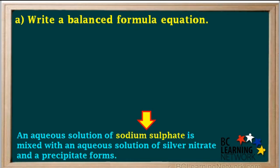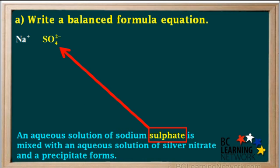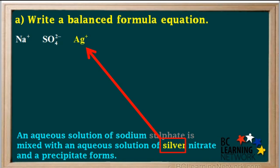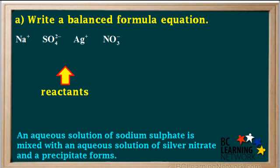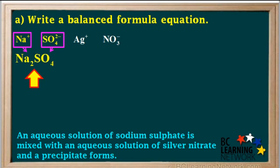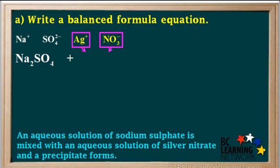We'll start with the formula equation. The first reactant is sodium sulfate, which is made up of sodium, or Na+ ions, and sulfate, or SO4 2- ions. You can find the formulas and charges for all common ions on an ion table. The second reactant is silver nitrate, which is made up of silver, or Ag+ ions, and nitrate, or NO3- ions. Combining sodium and sulfate ions gives us the formula Na2SO4, and combining Ag+ and NO3- ions gives us the formula AgNO3.